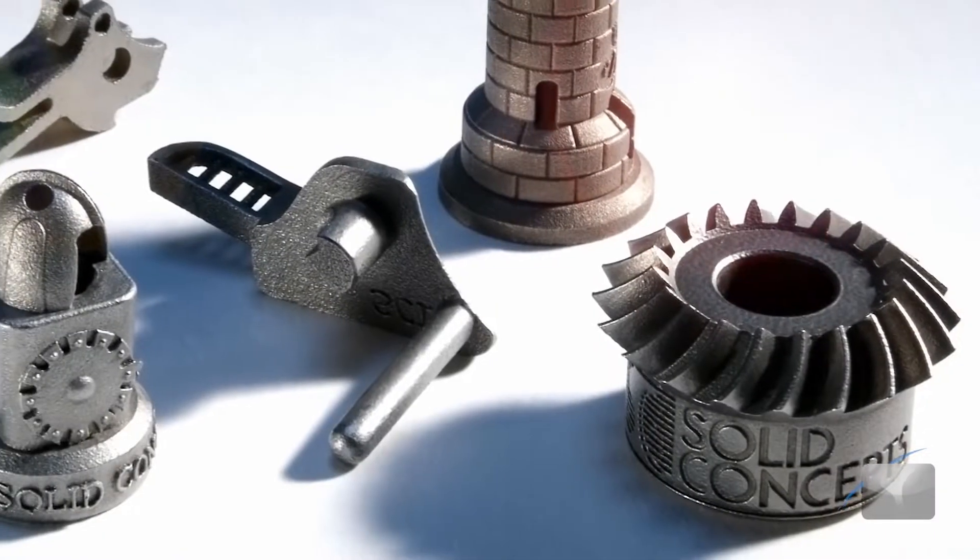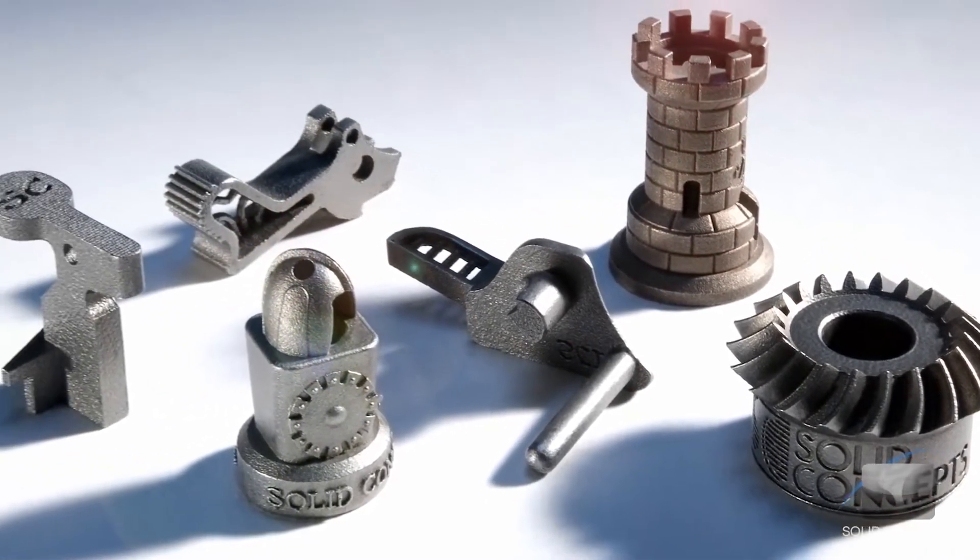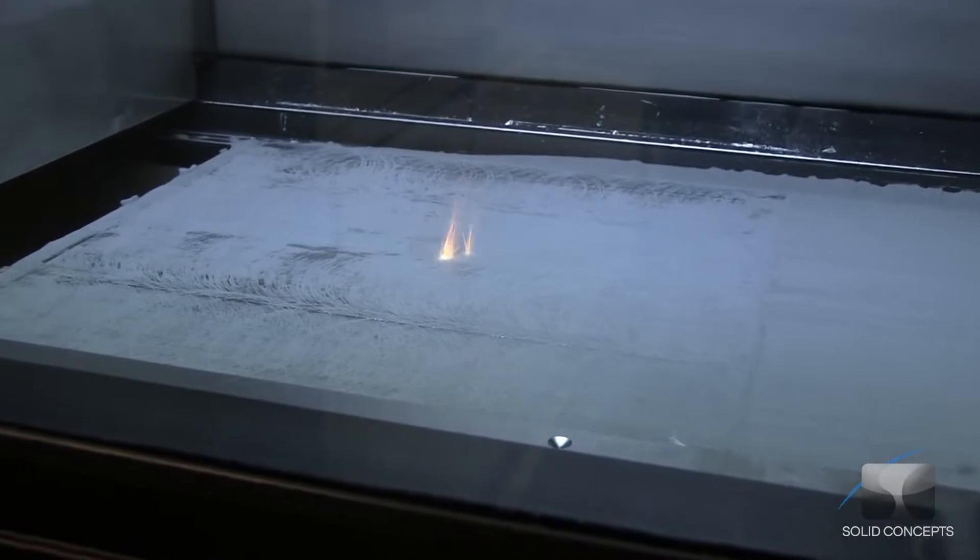DMLS utilizes a variety of metal and alloy materials such as stainless steel, cobalt chrome, and Inconel to create strong, durable parts and prototypes.